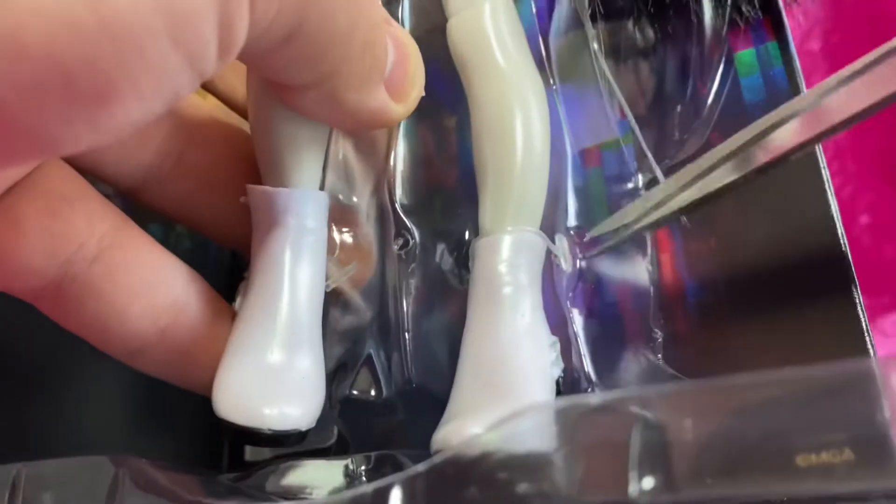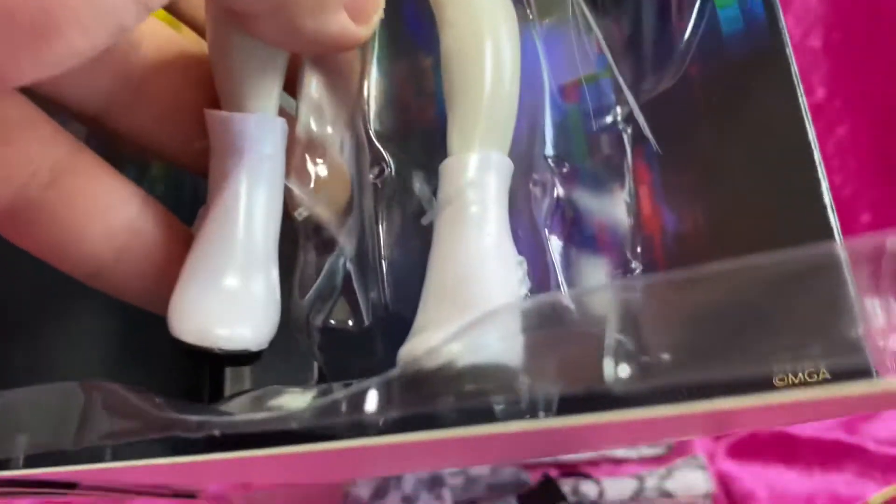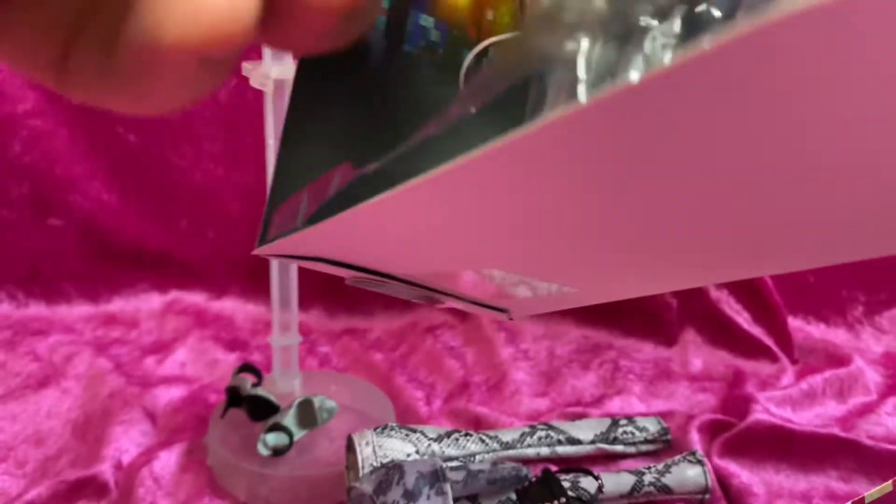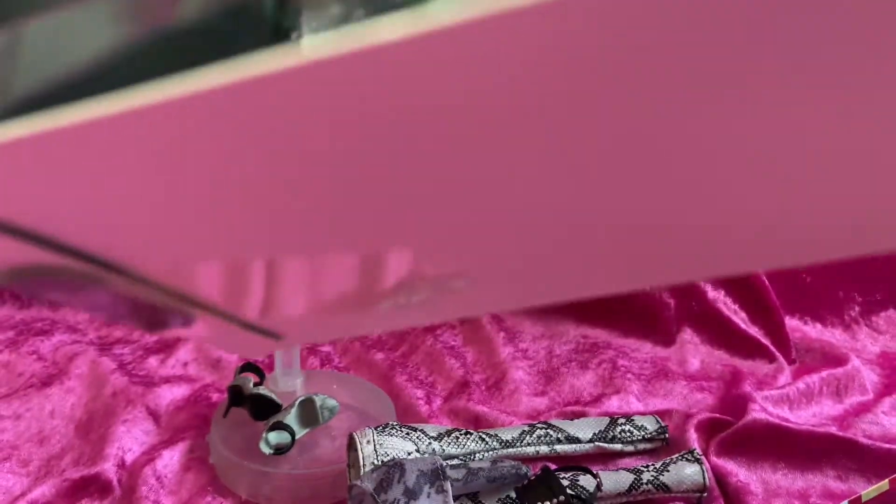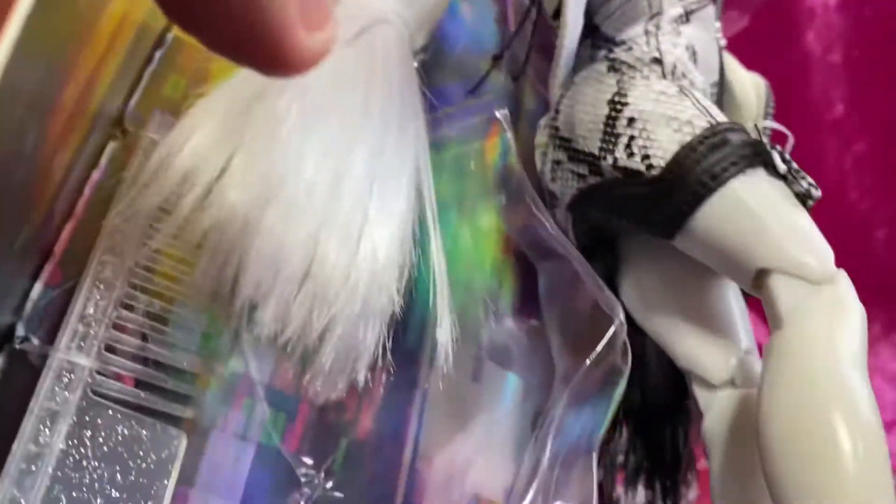So we're just gonna snip her feet out so we can remove her legs, and then she has one around her waist here. And then it's just her head and hair.